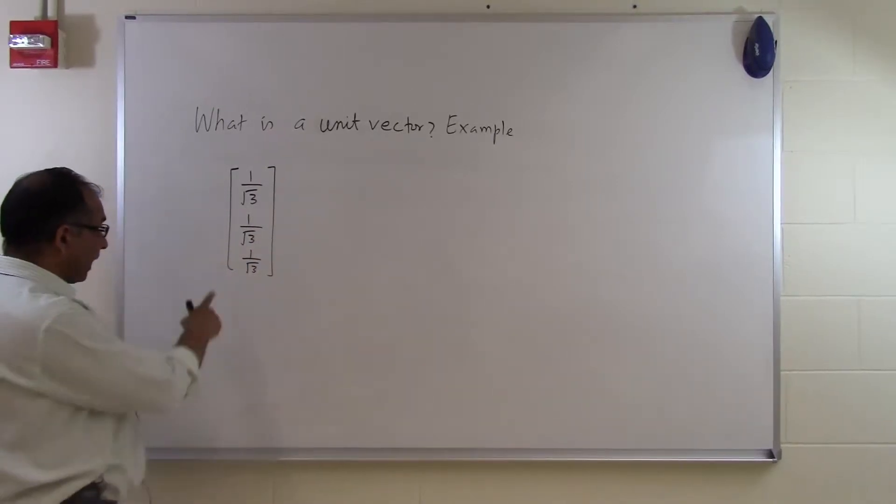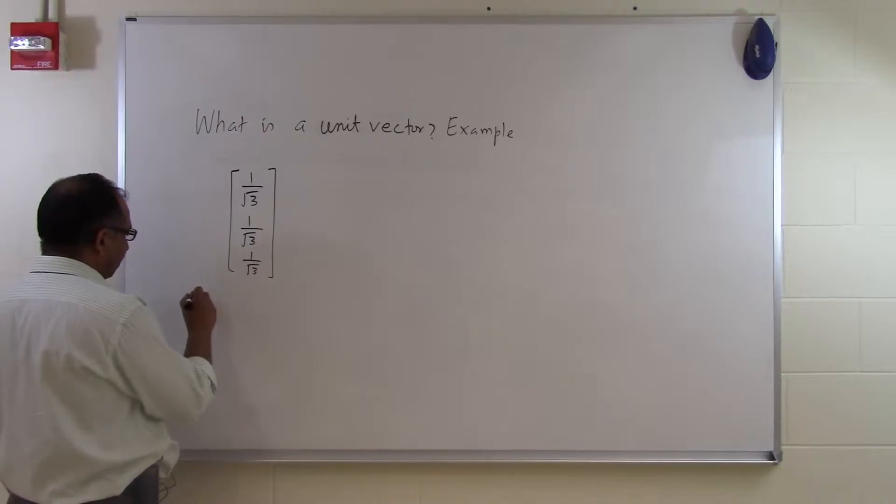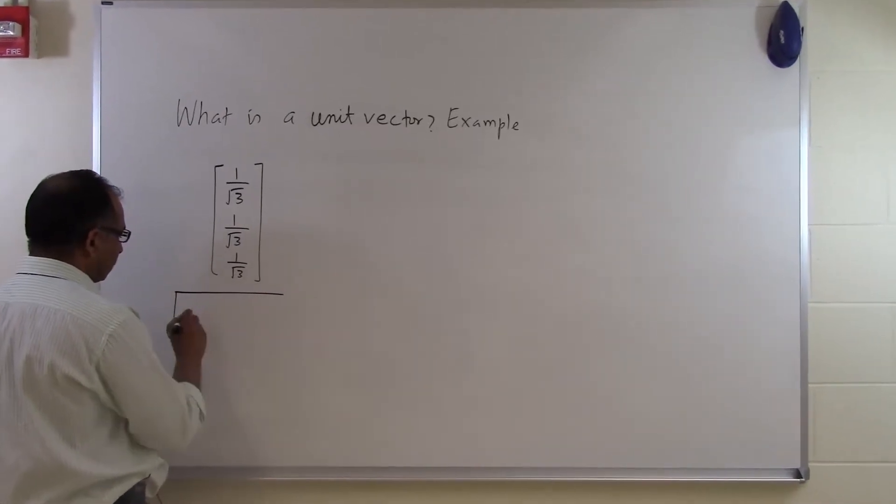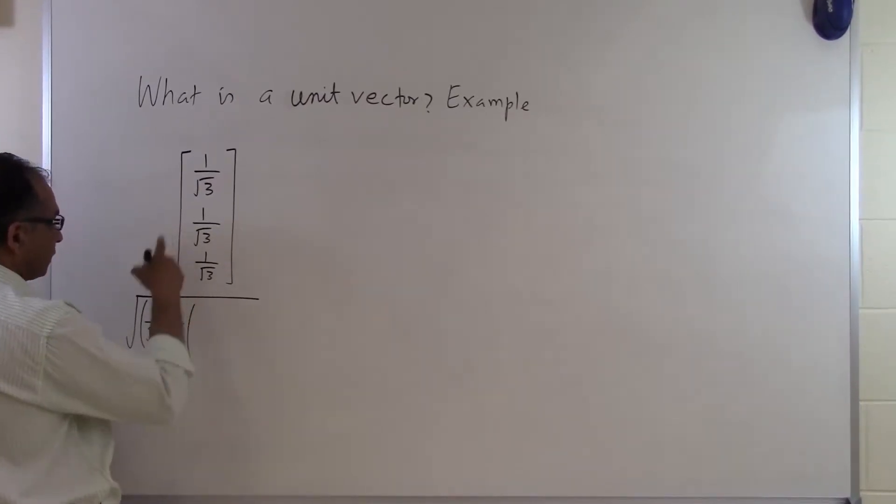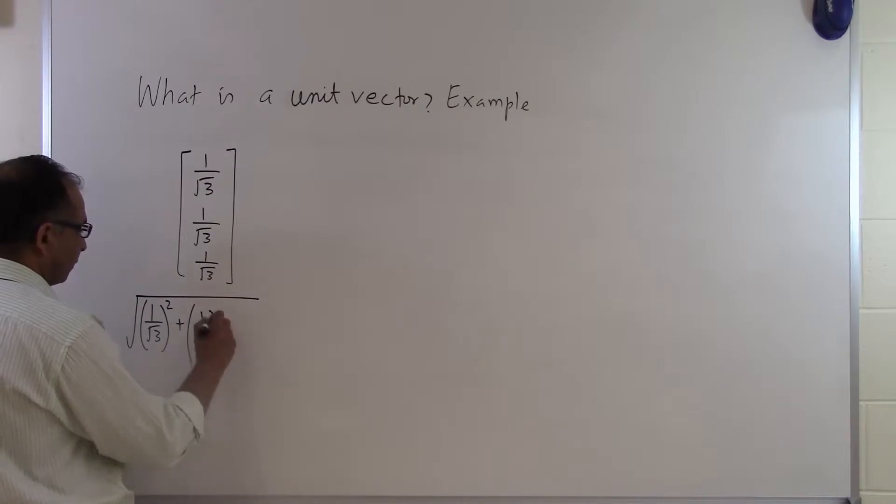Why is it a unit vector? Because its magnitude is 1. If I take the square root of the square of each of the components, the first component is 1 divided by square root of 3, I square it. The second component is 1 divided by square root of 3, I square it.